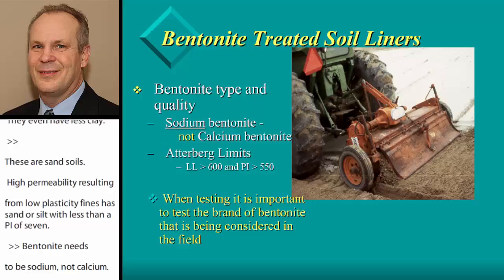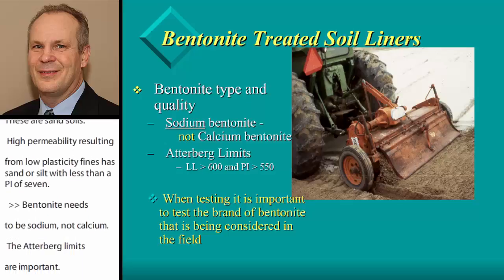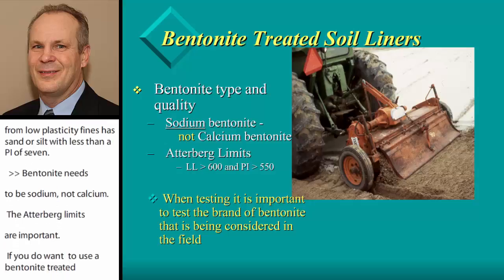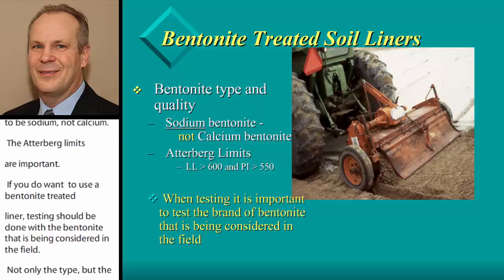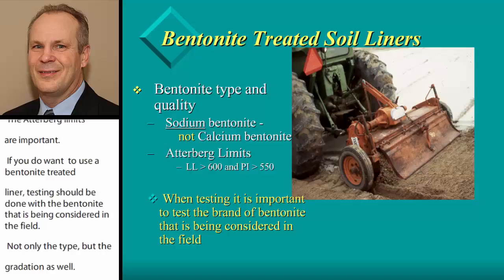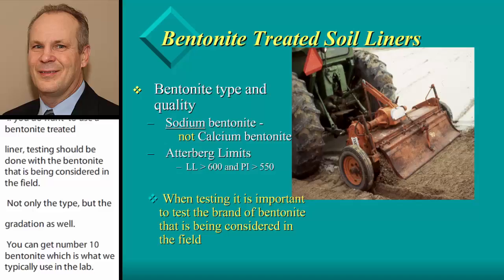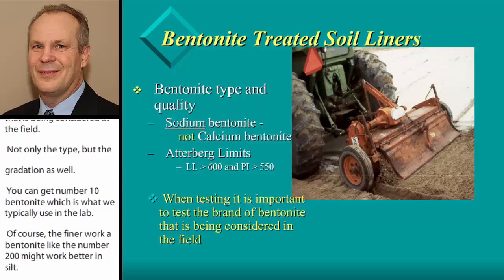If you want to use a bentonite-treated liner, testing should be done with the bentonite that you potentially want to use — not only the type, but the gradation of bentonite. You can get a different gradation: you can get number 200 bentonite, which is everything finer than the number 200 sieve, or you can get number 10 bentonite, which is everything finer than the number 10 sieve, which we typically use in the lab. The finer bentonite, like the number 200, might work a little better in silts, but it's harder to apply and can be messy, especially in a windy time of year or a windy state.